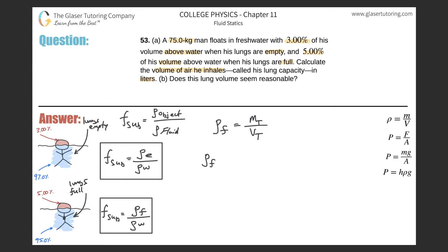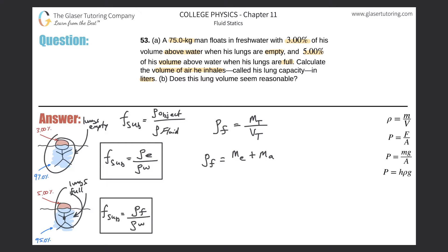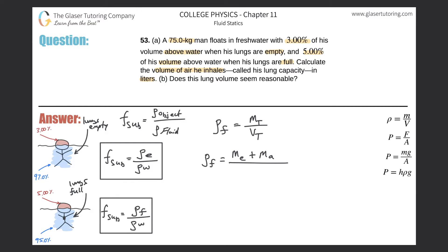The density of the man when his lungs are full equals the total mass — which we break up as the mass of the man when his lungs are empty plus the mass of the additional air he took in — all divided by the total volume, which is the volume of the man's body when his lungs are empty plus the volume of air that he inhaled.